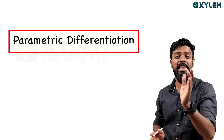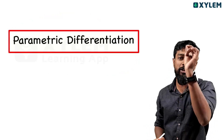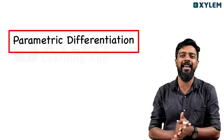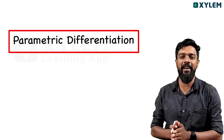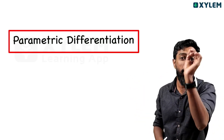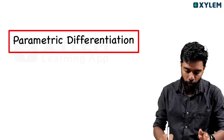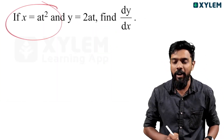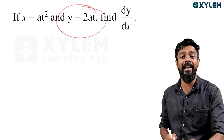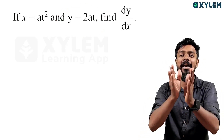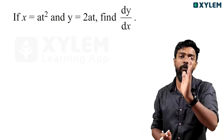If you watch this video, don't skip it. The first part covers x equals at squared, y equals 2at — that is, how to find dy by dx.